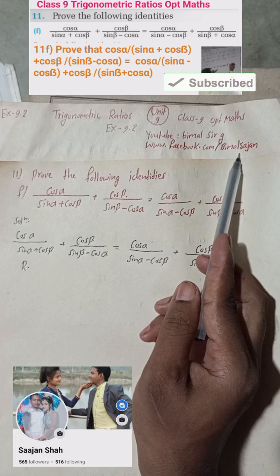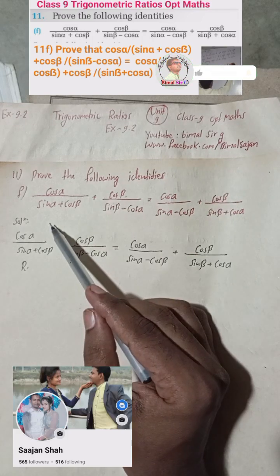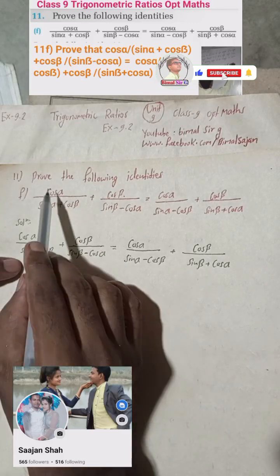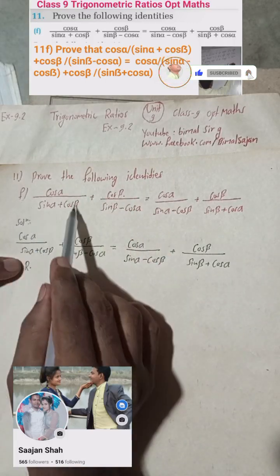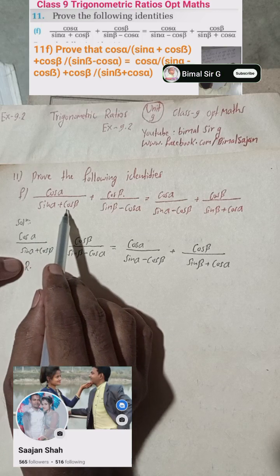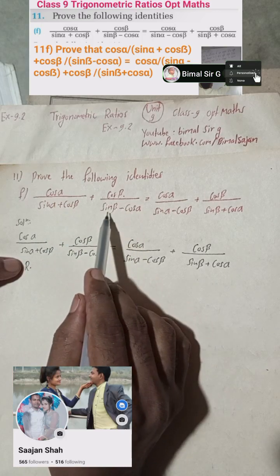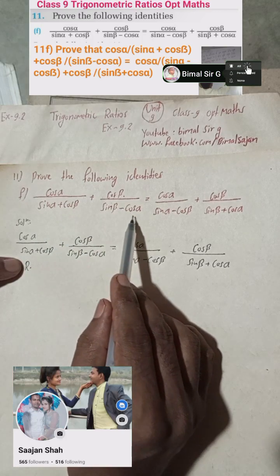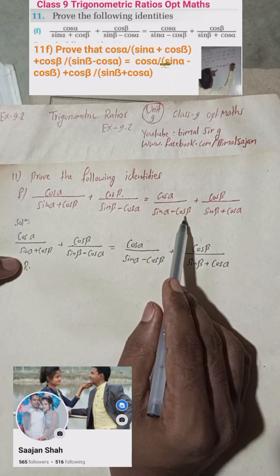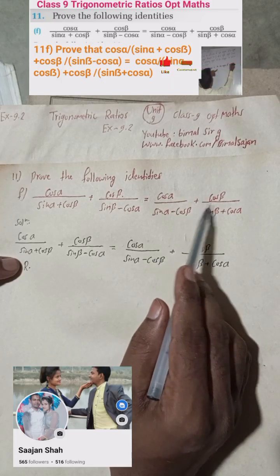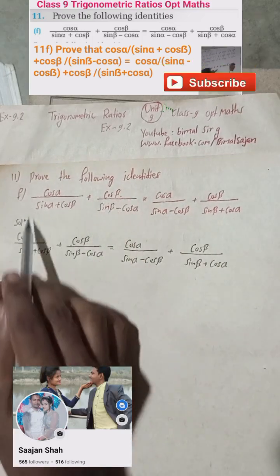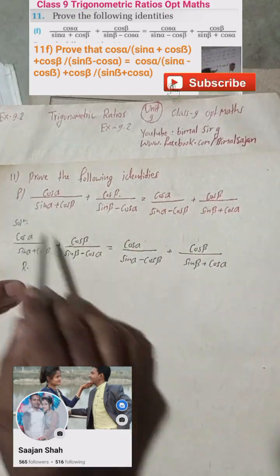Let's solve this question: Prove the following identity. f is equal to cos alpha by sin alpha plus cos beta, equals cos beta by sin beta minus cos alpha, equals cos alpha by sin alpha minus cos beta plus cos beta by sin beta plus cos alpha.